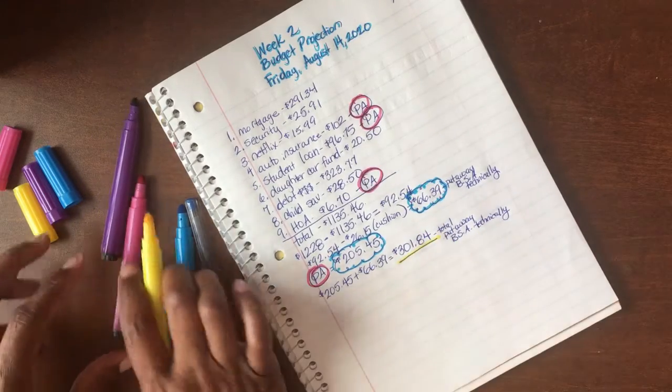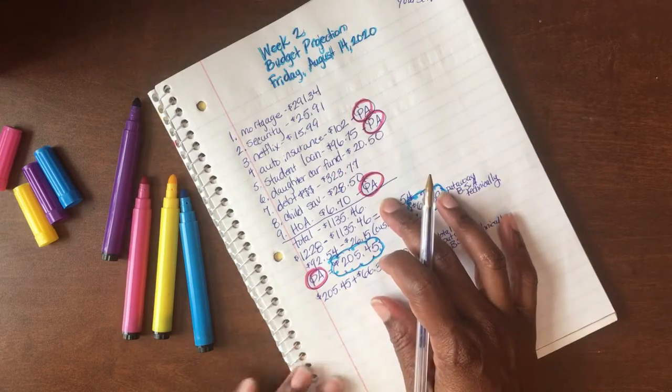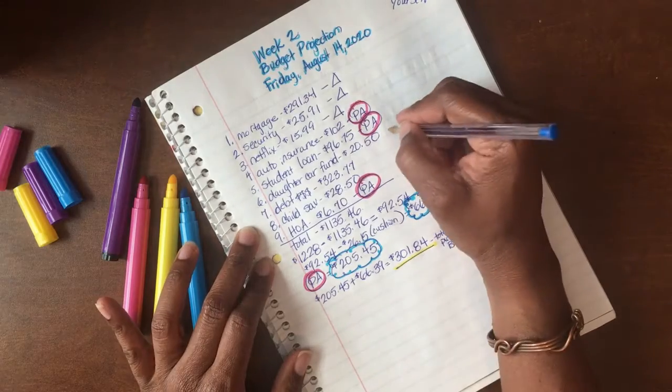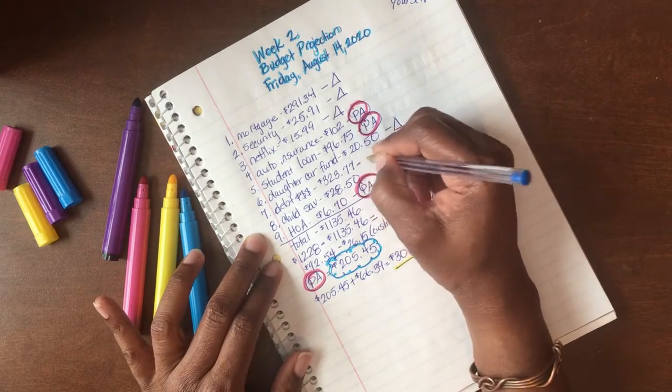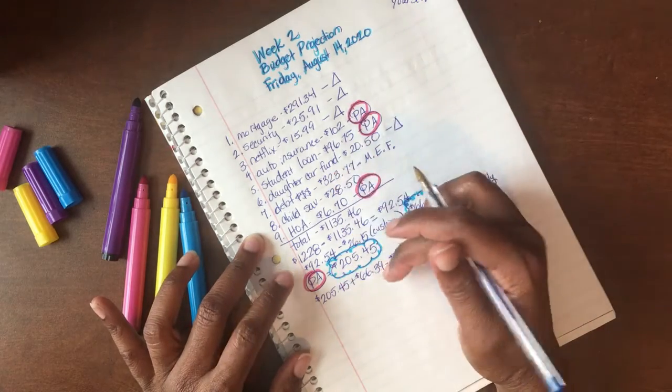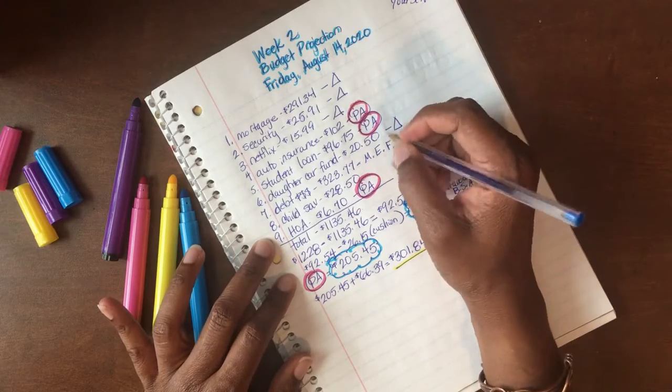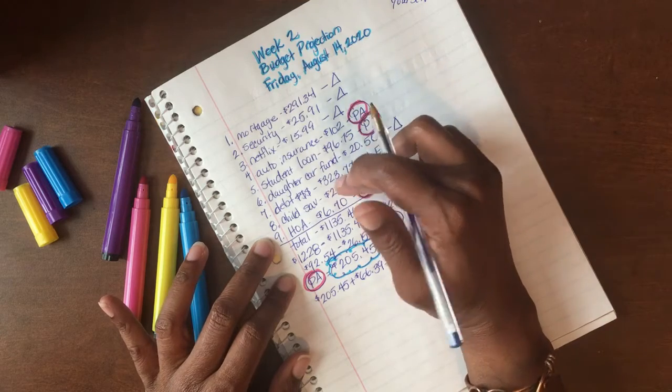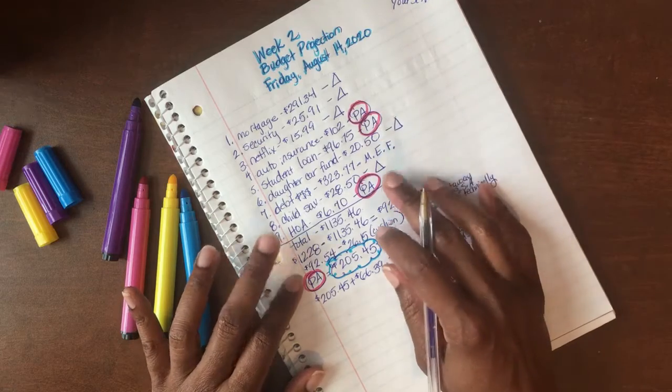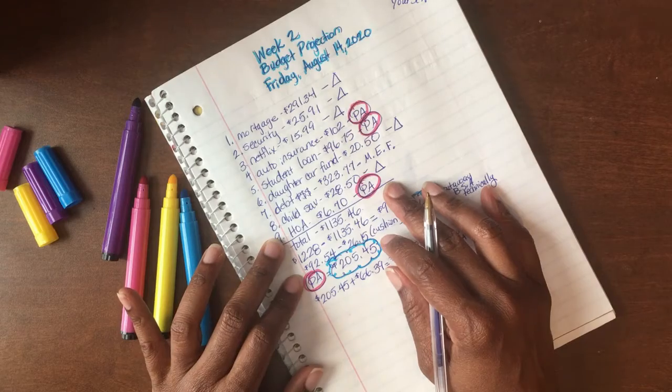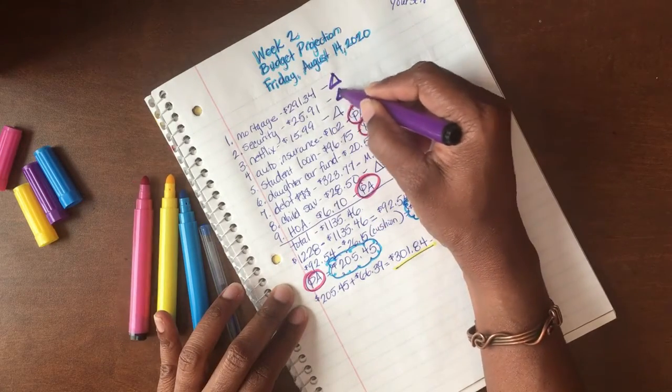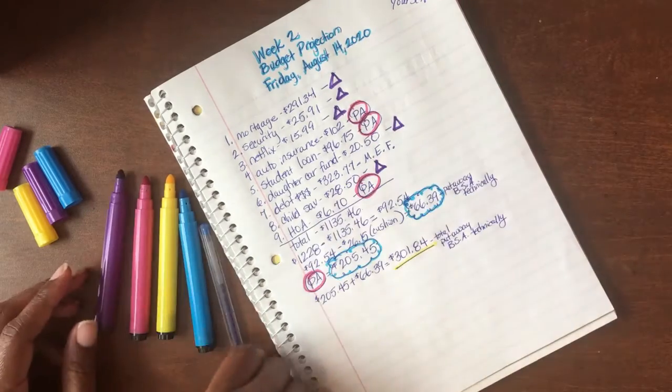Now the fourth step is to go back through and put a purple triangle by all those items that we will be satisfying for this upcoming week. That will be the mortgage, the security, Netflix will also come out this week. I send the money to my daughter's car fund. This money I'm just going to put MEF because it's going to the mini emergency fund. That's where I'm going to stick it for now. If I do something else with it, it probably will be paid toward my mortgage. I'll let you know in my budget recap what I did with that money.